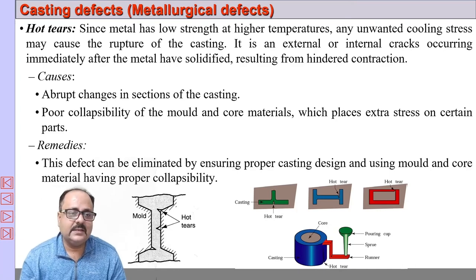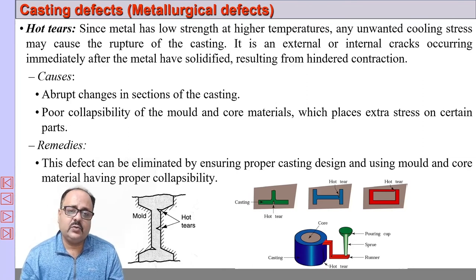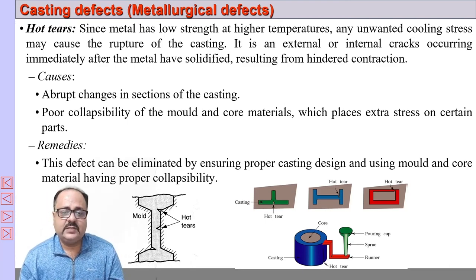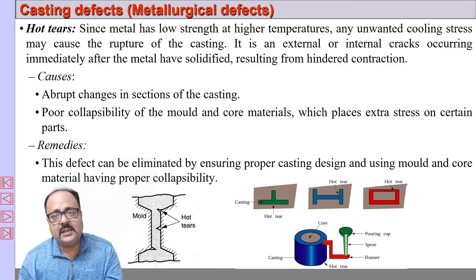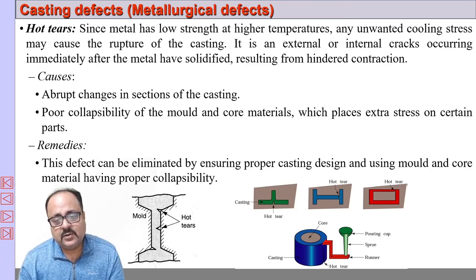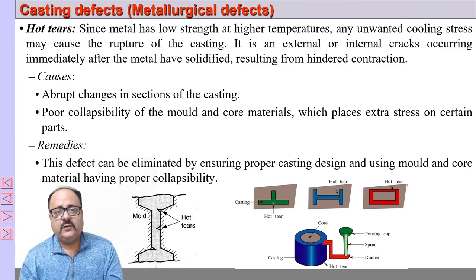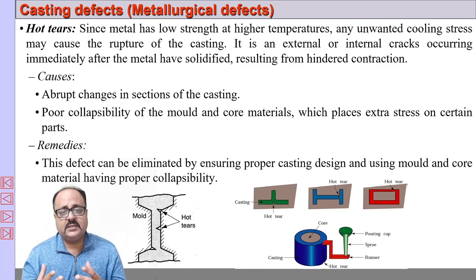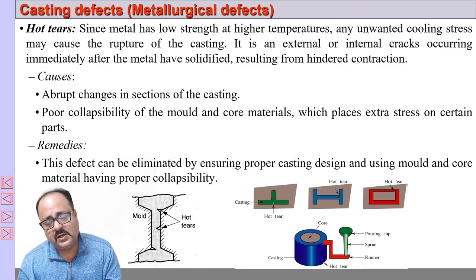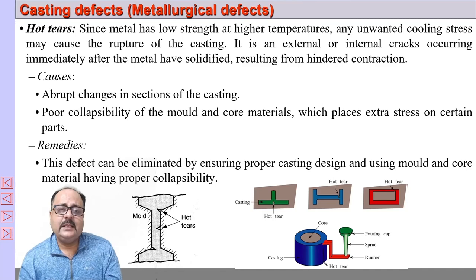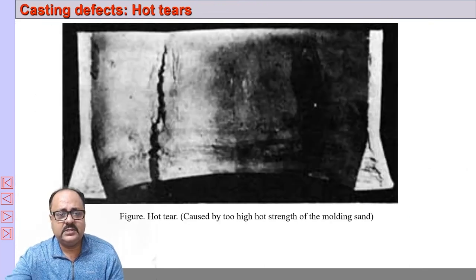Hot tears: this is a metallurgical defect that happens mainly because of improper solidification. If part of the casting cools fast while another — being heavy — cools slowly, a temperature gradient develops. At abrupt changes in cross-section, the casting may crack — such cracks are called hot tears. Hot tears can also occur when a casting has an internal core: as the casting shrinks, if the core has very high strength and does not allow the casting to shrink freely, the casting may fracture — this is also called hot tears.